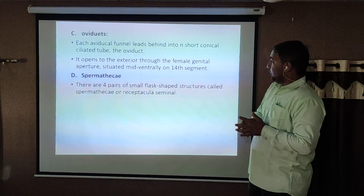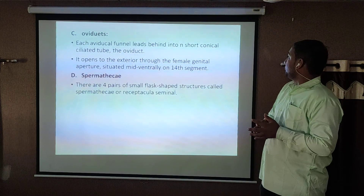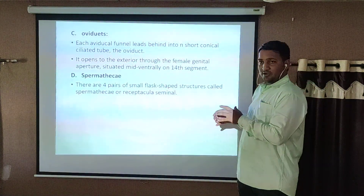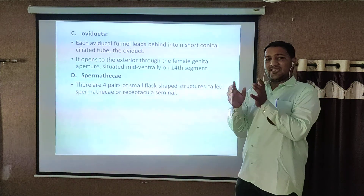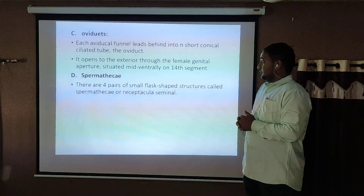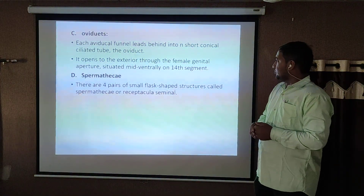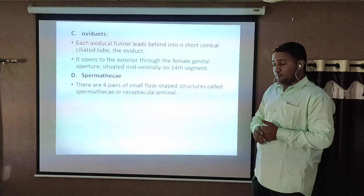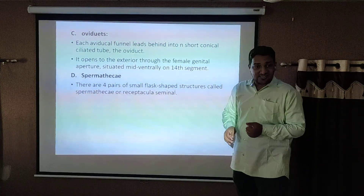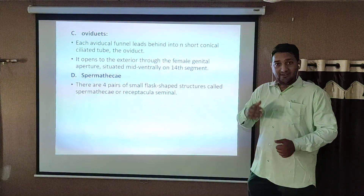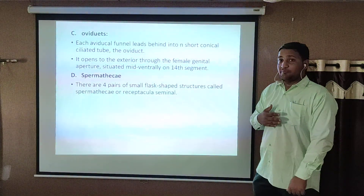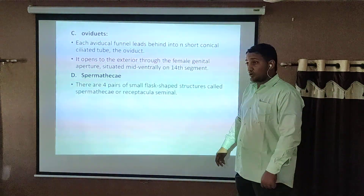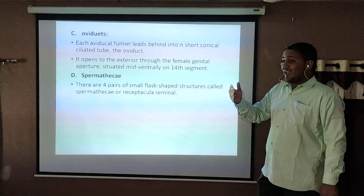Oviducts: each oviducal funnel leads behind into a short conical ciliated tube — the oviduct. The oviduct is a duct-like structure that carries the ova and opens to the female genital aperture, which is situated mid-ventrally on the ventral surface of the 14th segment of the body.